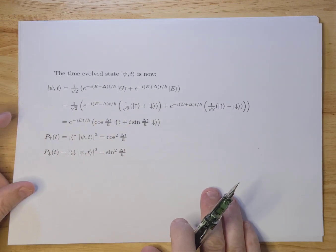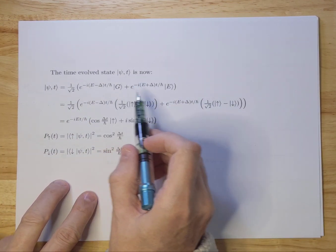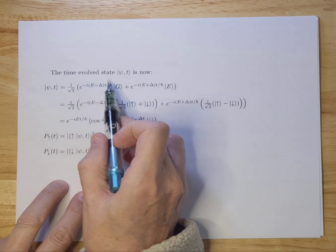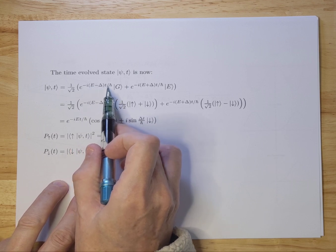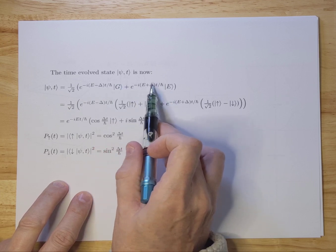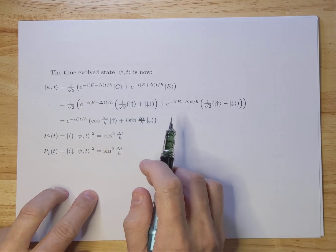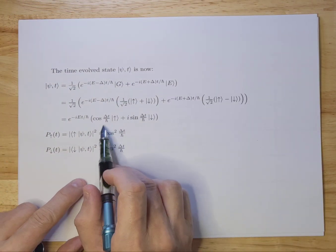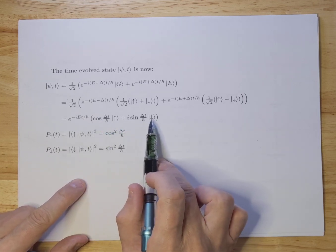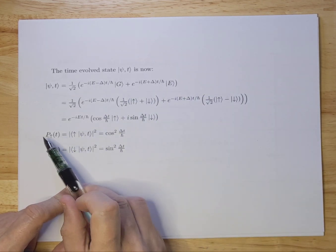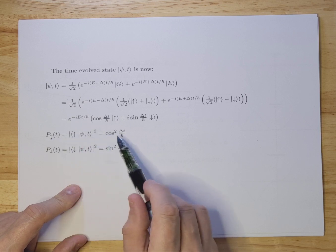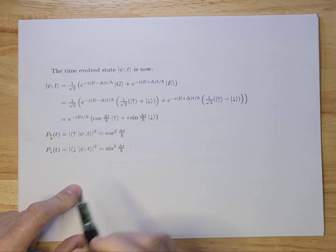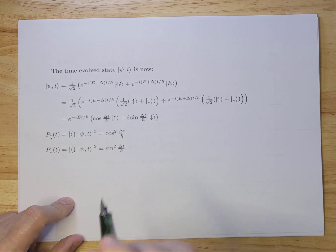To give you an idea of the time-evolved state, we insert the ground and excited states into the Schrödinger equation. The solution has your ground state energy E to the power of minus i(E minus delta) times t over h-bar times the ground state, plus the excited state energy times the excited state. If you work that out based on the eigenstates we calculated before and fill those in, you get cosines and sines. The probability of finding the system in an up state is cosine squared of delta times t divided by h-bar, which flips between zero and one — and the same applies for the down state.